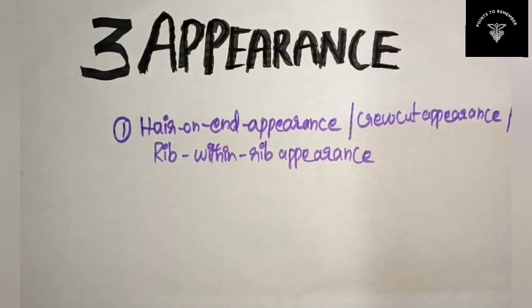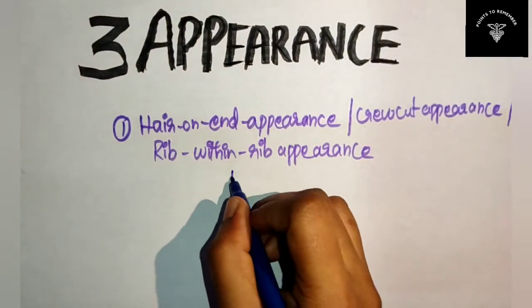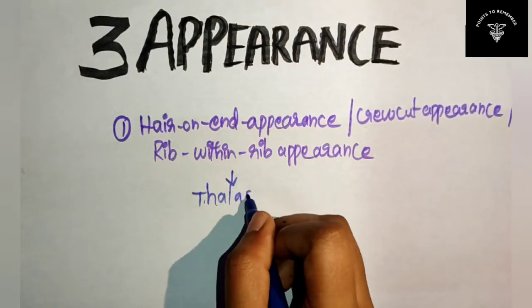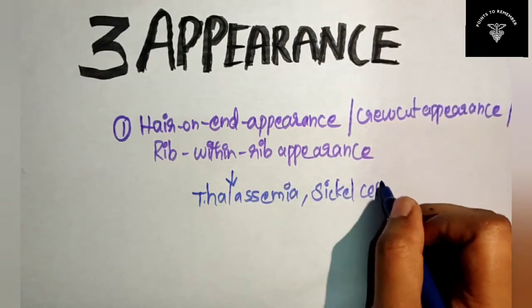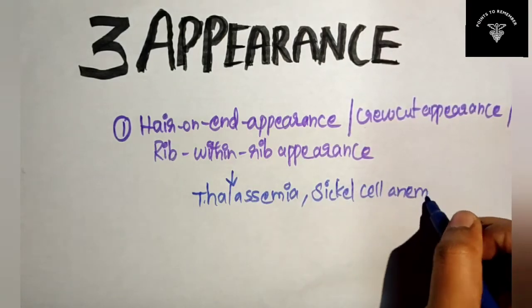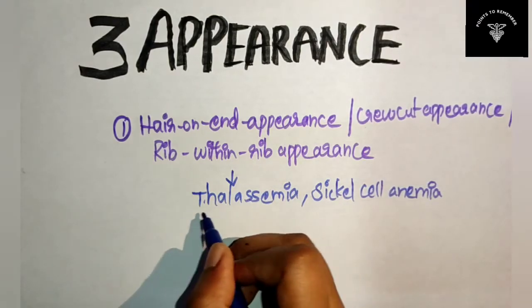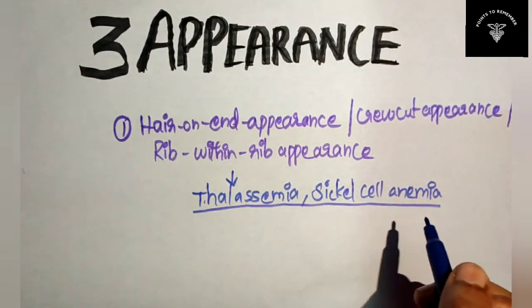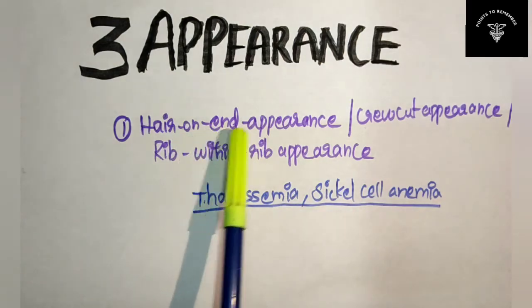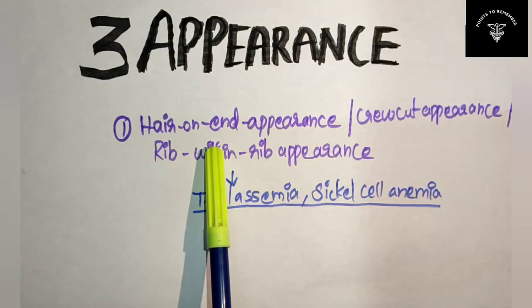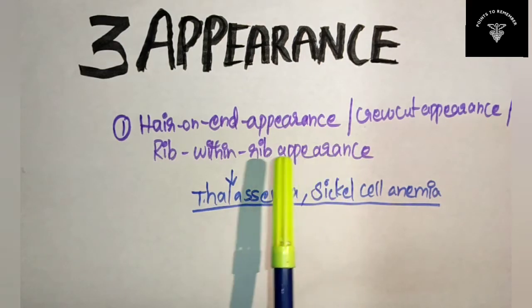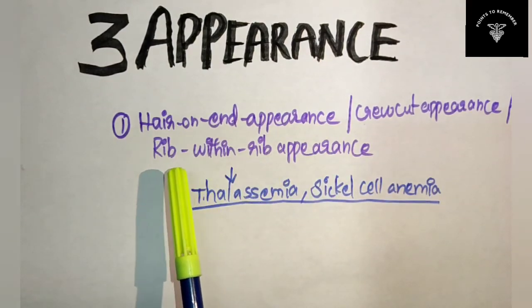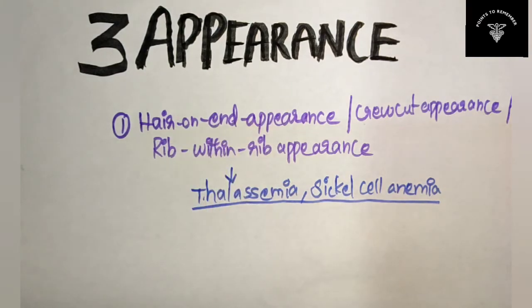Where do you find this appearance? Hair on end appearance is usually seen in thalassemia and also in sickle cell anemia. If they ask in your exam, you can write either one, but you should remember all three names of this appearance: hair on end appearance, crew cut appearance, or rib within a rib appearance.